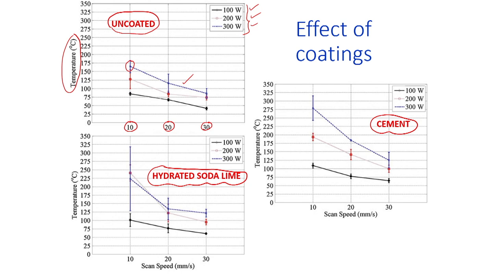For the same process conditions, if we apply hydrated soda lime, the recorded temperature increased to more than 225 degrees Celsius. When cement was applied under the same conditions, the temperature was further enhanced to 275 degrees Celsius. The conclusion of this experimental study is that cement is the better coating option to improve absorptivity, and since it is easily available and easy to apply, it saves a lot of laser beam energy to get the required bend angle.